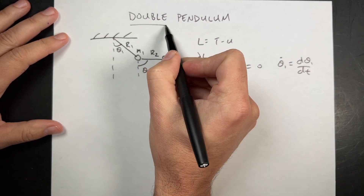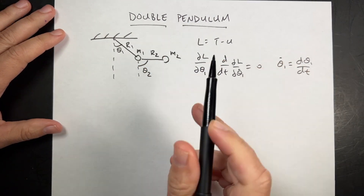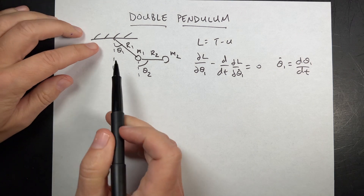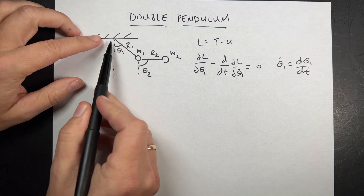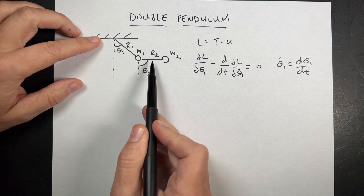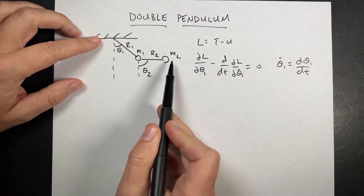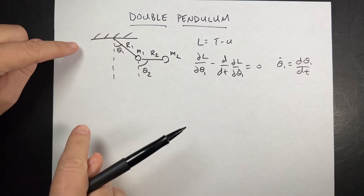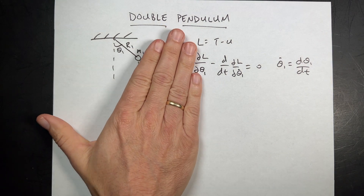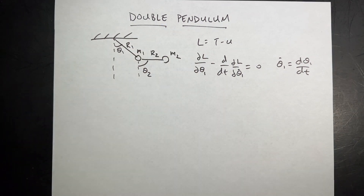Let's do the double pendulum. It's a pretty tough problem technically, but setting it up isn't really that bad. A double pendulum has some massless rod of length R1 with a mass M1, and then another massless rod R2 connected to another mass M2. This thing can swing around and do all sorts of cool things — it's like a pendulum with just one thing, but you've got another pendulum on there.